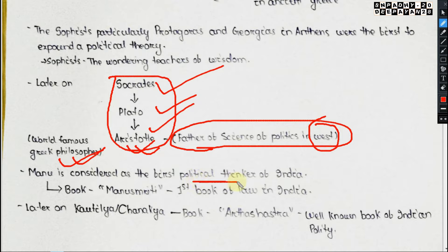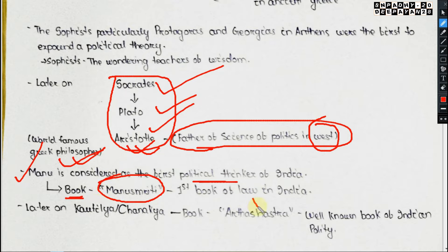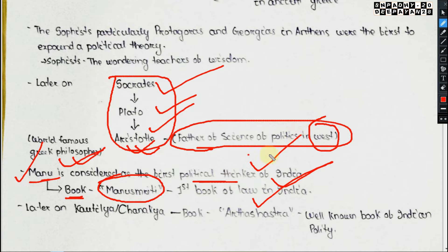From India, Manu is considered the first political thinker. He wrote Manu Smriti, which is the first book of law in India. So remember: Manu is the first political thinker of India, and Manu Smriti is the first book of law in India.